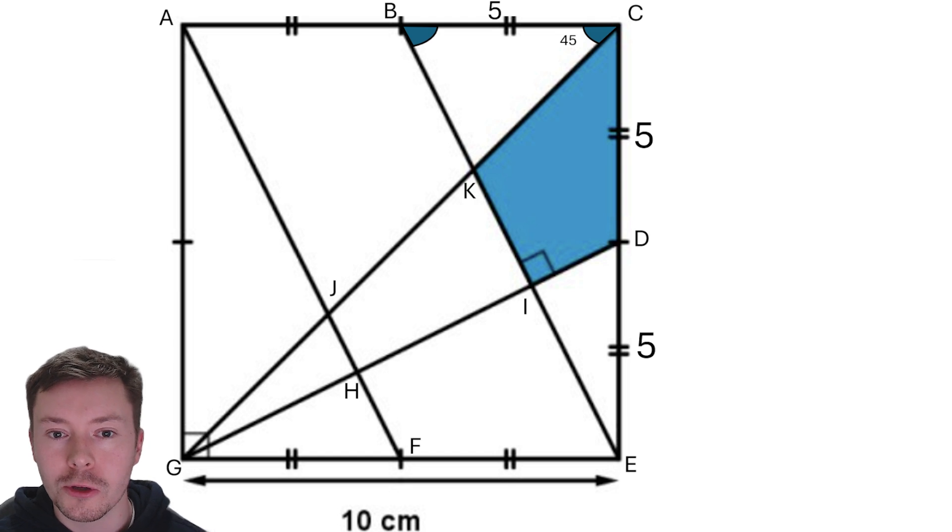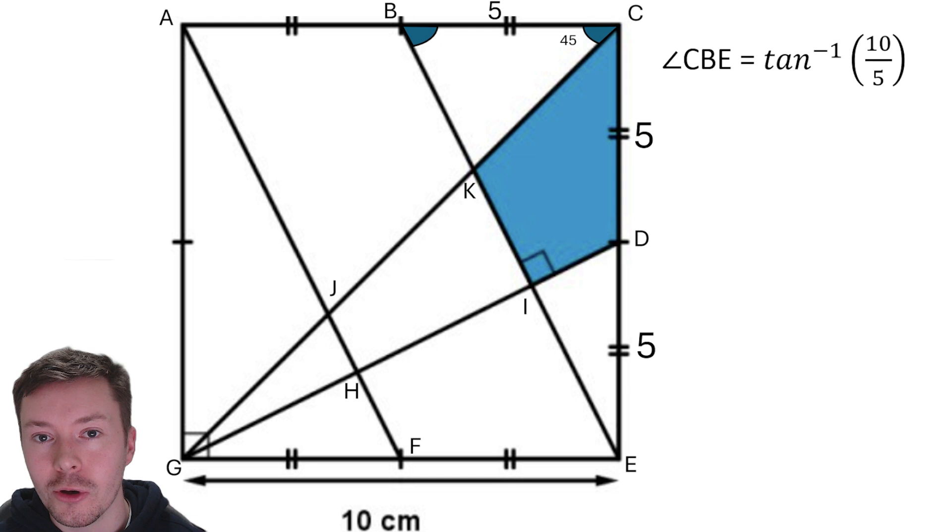Well, what I want to do is to actually use the larger triangle, that is B, C, E. And I'm going to use right angle trigonometry. So that angle, I've got opposite it a side length of 10, and along the top, adjacent to it, a side length of 5. So that angle is going to be inverse tan of 10 over 5. And that gives us an answer of 63.4349.